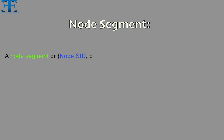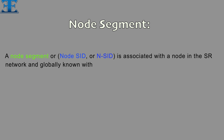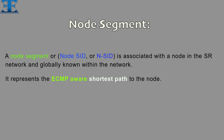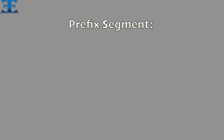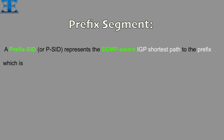Now I want to explain three more segment types. A node segment is associated with a node in the SR network and is globally known within the network. It represents the ECMP-aware shortest path to the node, and is a segment allocated to a loopback that identifies a specific node. A prefix SID represents the ECMP-aware IGP shortest path to the prefix, which is attached to one or more nodes in the network.